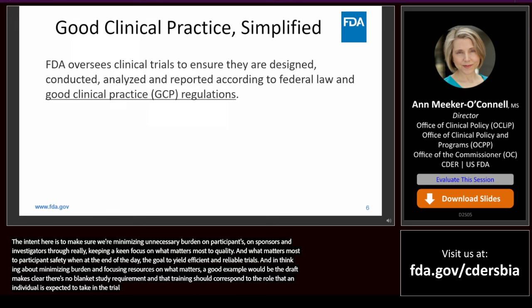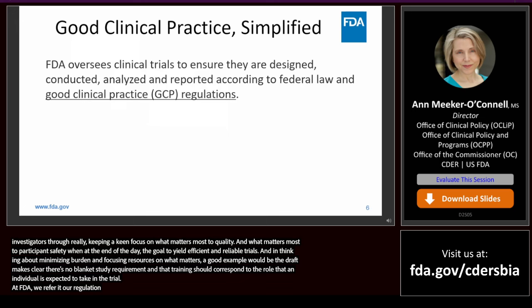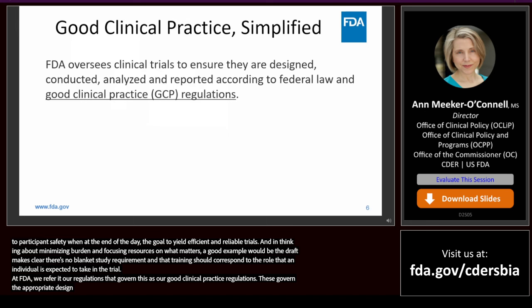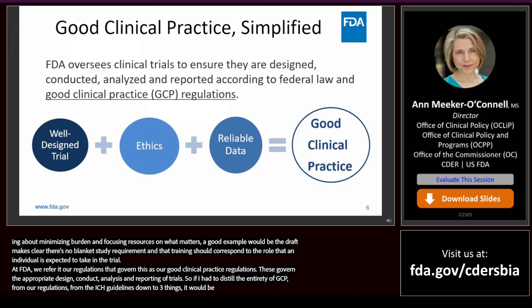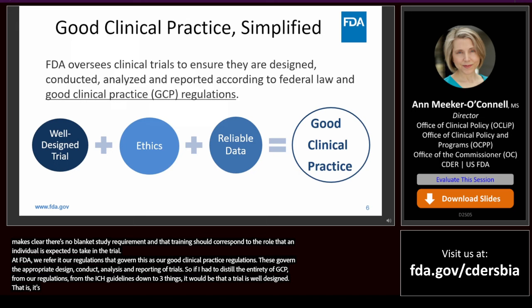At FDA, we refer to our regulations that govern human subjects protection and the conduct of clinical trials as our good clinical practice regulations. These govern the appropriate design, conduct, analysis, and reporting of trials. If I had to distill the entirety of GCP from our regulations and the ICH guidelines down to three things, it would be: first, that a trial is well designed — that is, it is of appropriate scientific quality and the design itself is ethical.